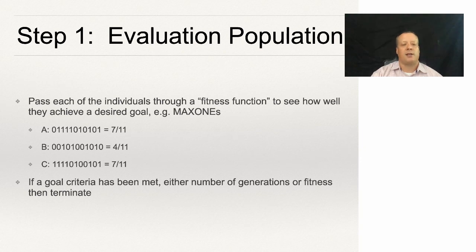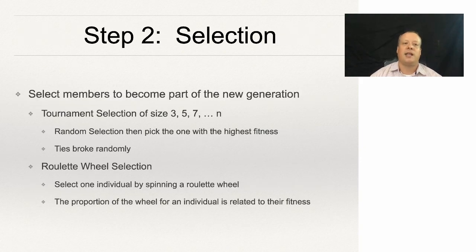Step two: we're going to select the members to become part of the new generation. The reason why we do this is because we can't allow all the individuals to pass over to the next generation. Instead, some of them are going to be more likely to pass over.